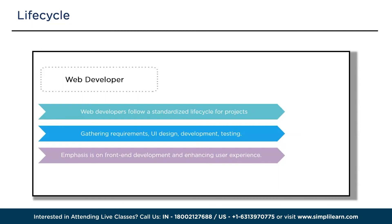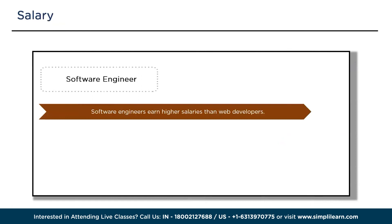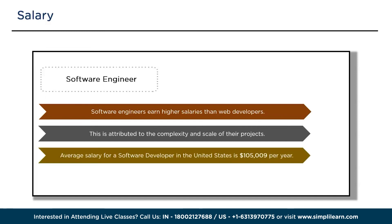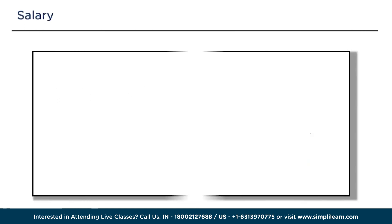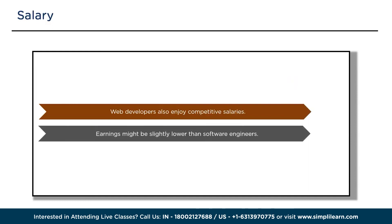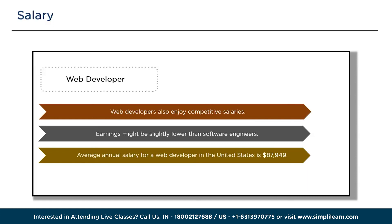In terms of salary, software engineers generally earn higher salaries compared to web developers, due to the complexity and scale of projects they work on and their broader skill set. The average salary for a software engineer is $105,000 per year in the United States. Web developers also enjoy competitive salaries, especially those with expertise in high-demand technologies. Their average salary is $87,000 per year in the United States.